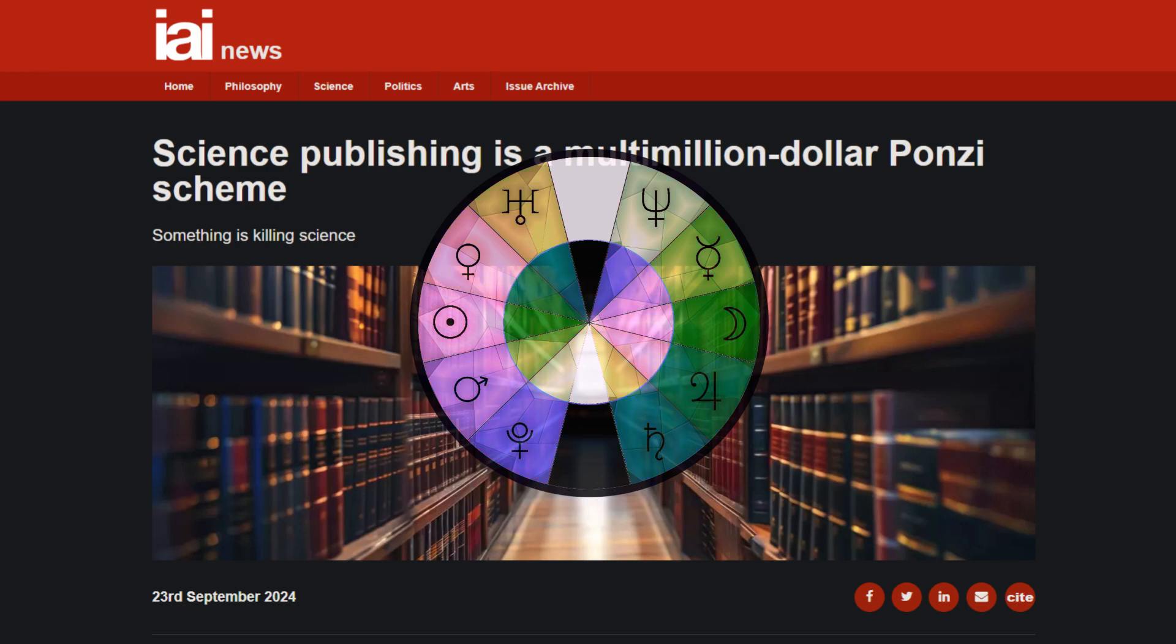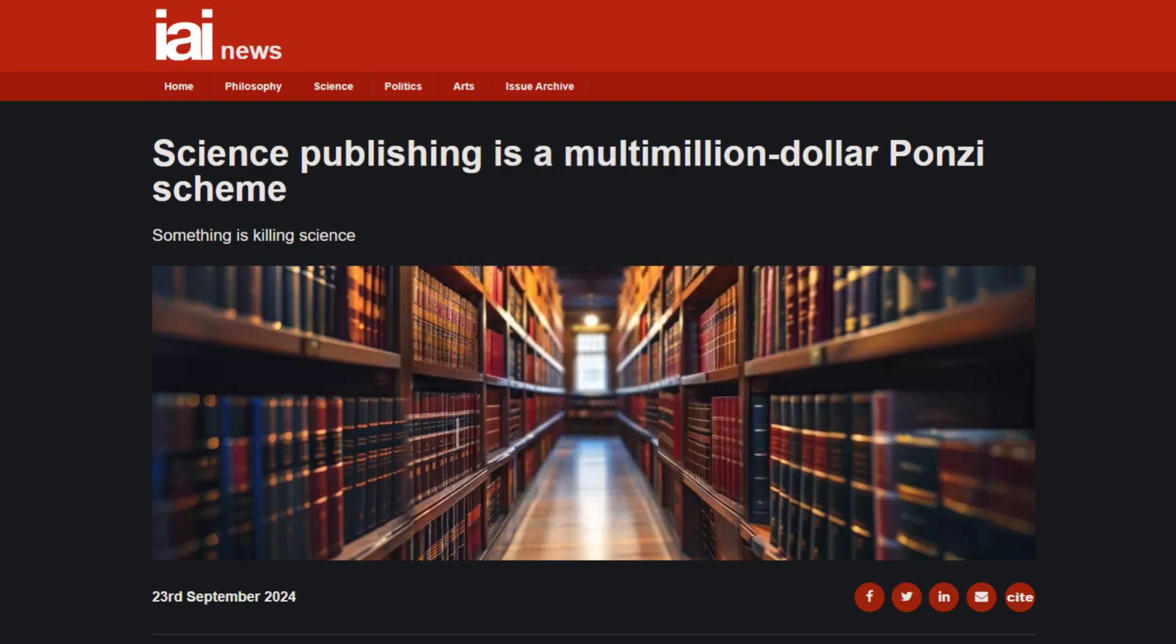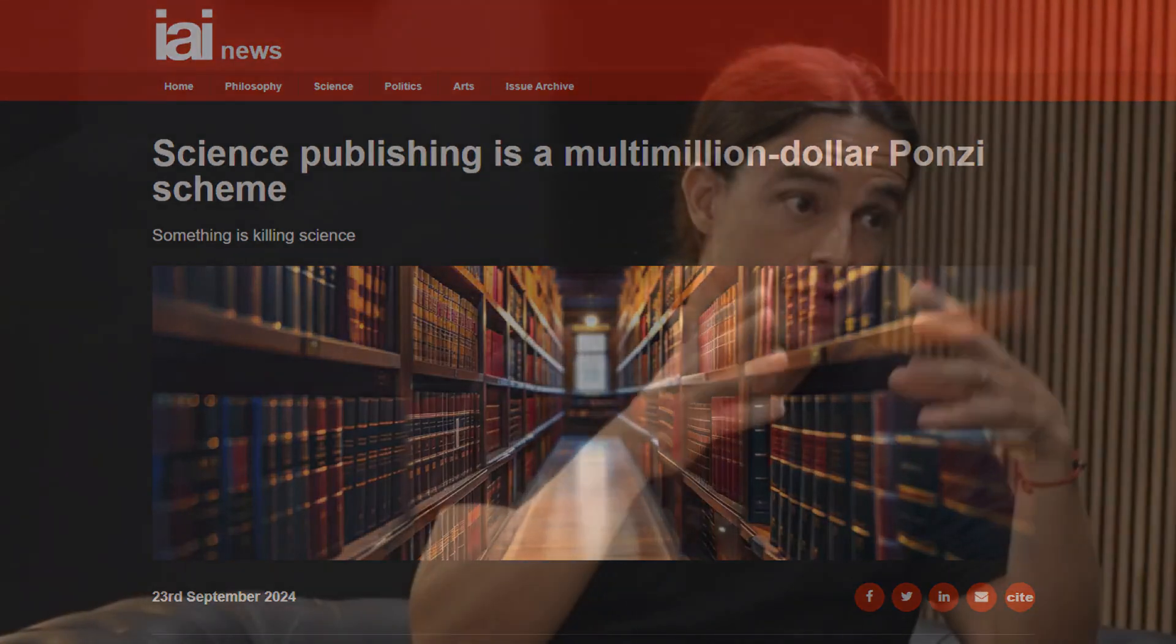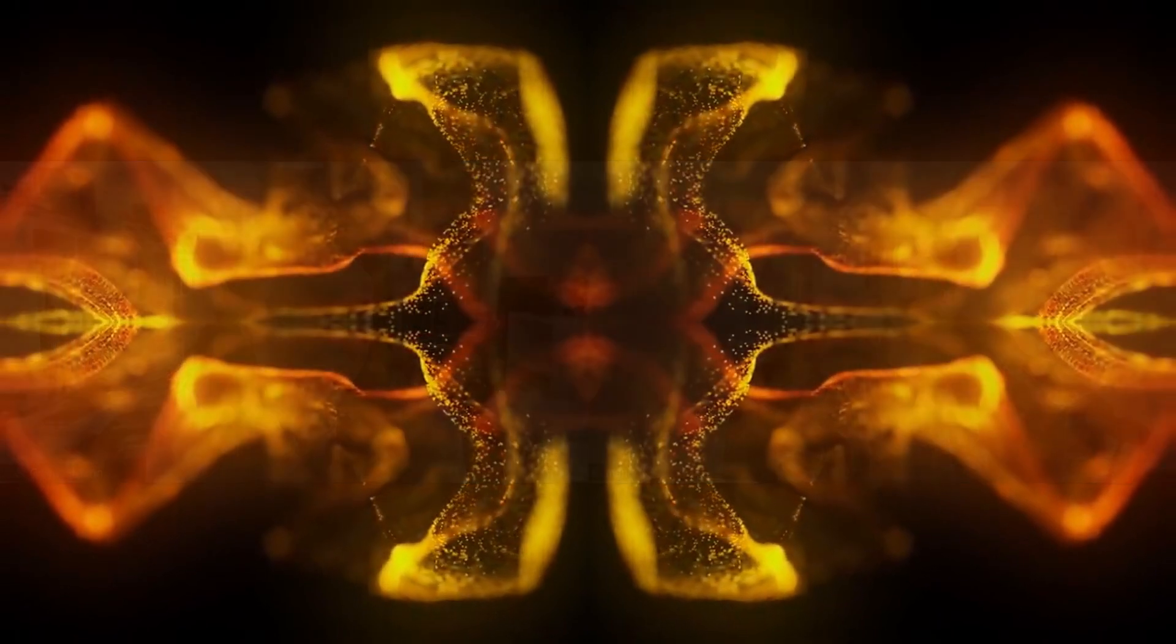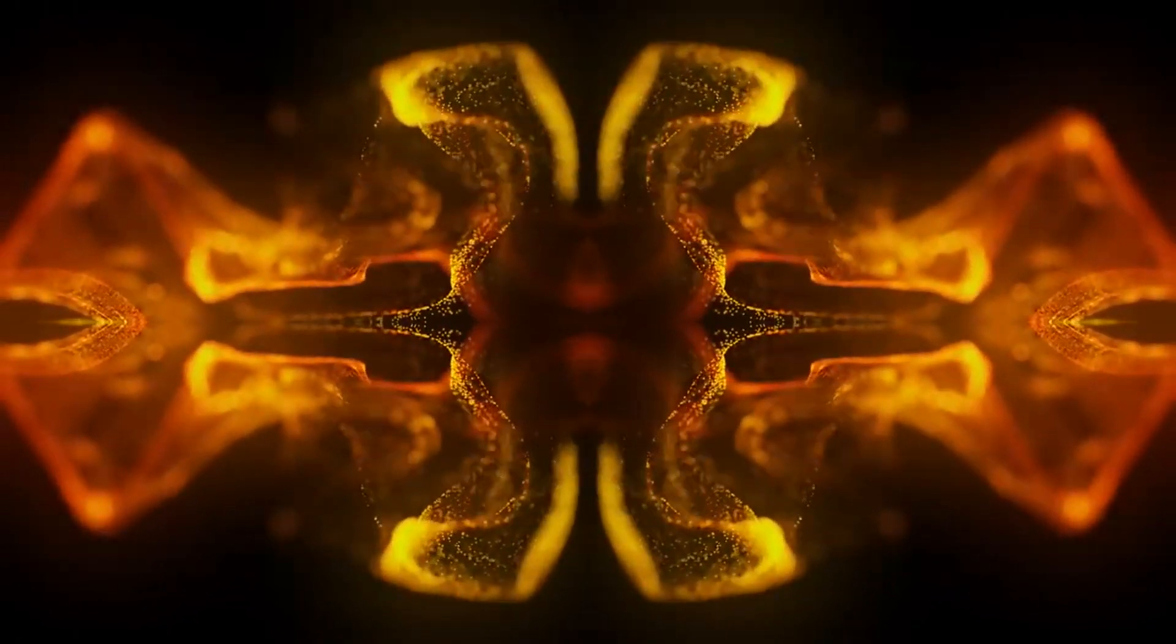The following is an article titled, 'Scientific Publishing is a Multi-Million Dollar Ponzi Scheme,' written by Alex Gomez-Marin, a theoretical physicist and neuroscientist, director of the Pari Center for New Learning in Italy. This article was originally published by the Institute of Arts and Ideas, or IAI, on the 23rd of September, 2024.